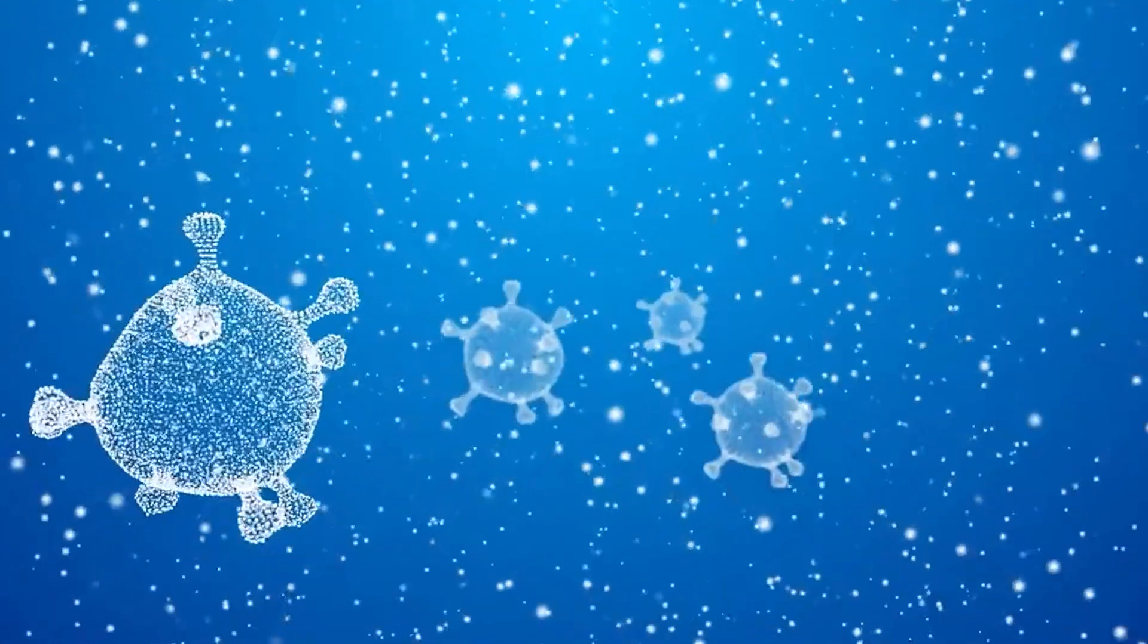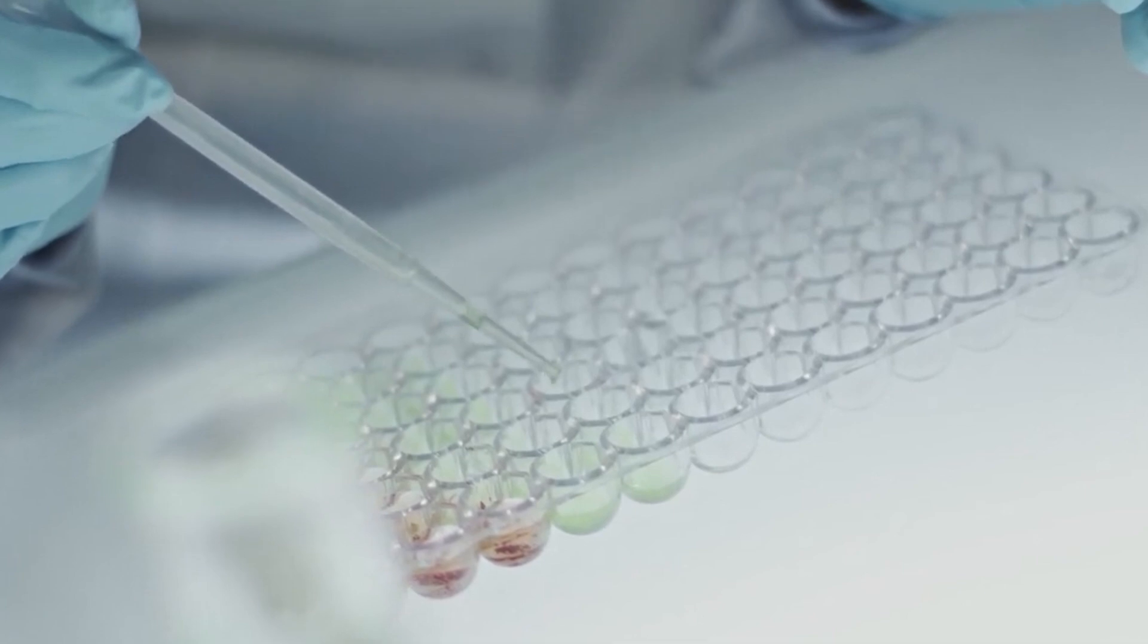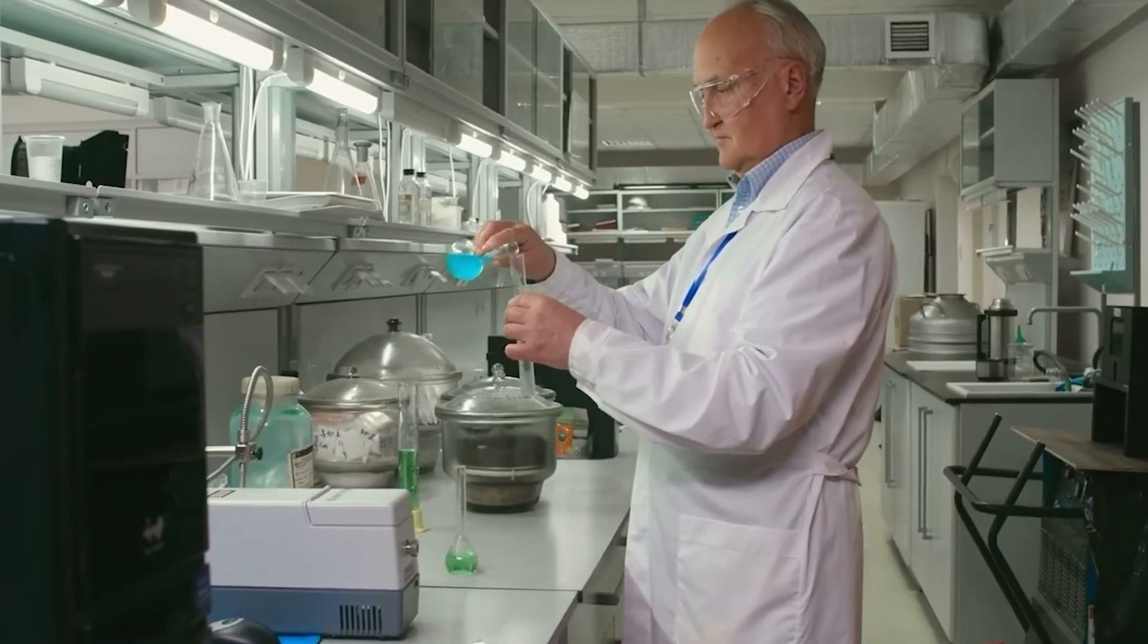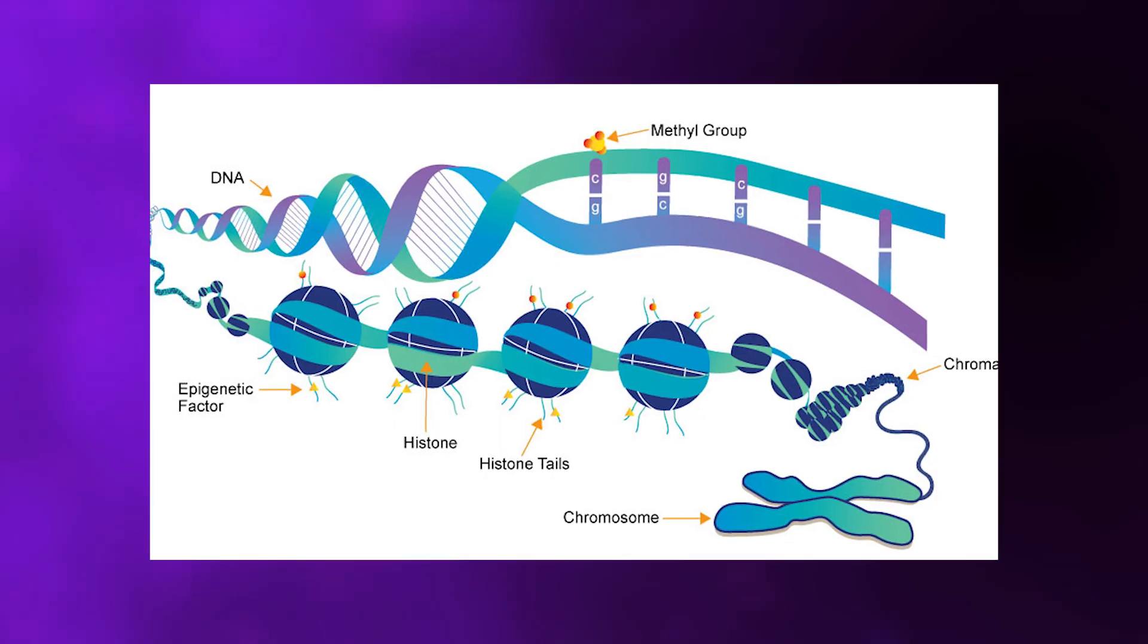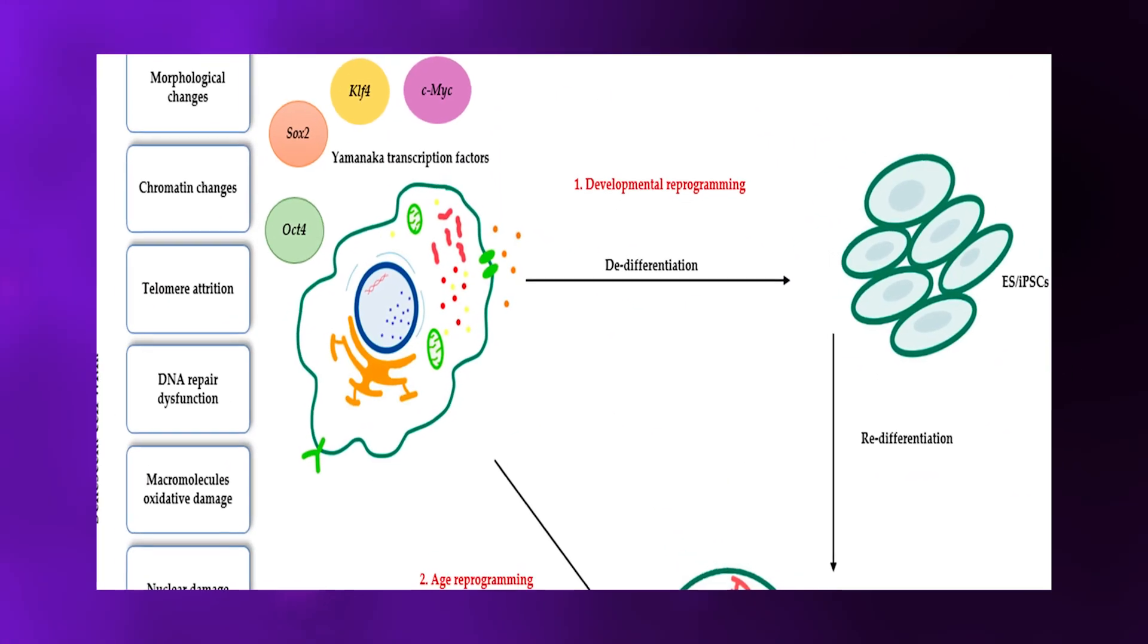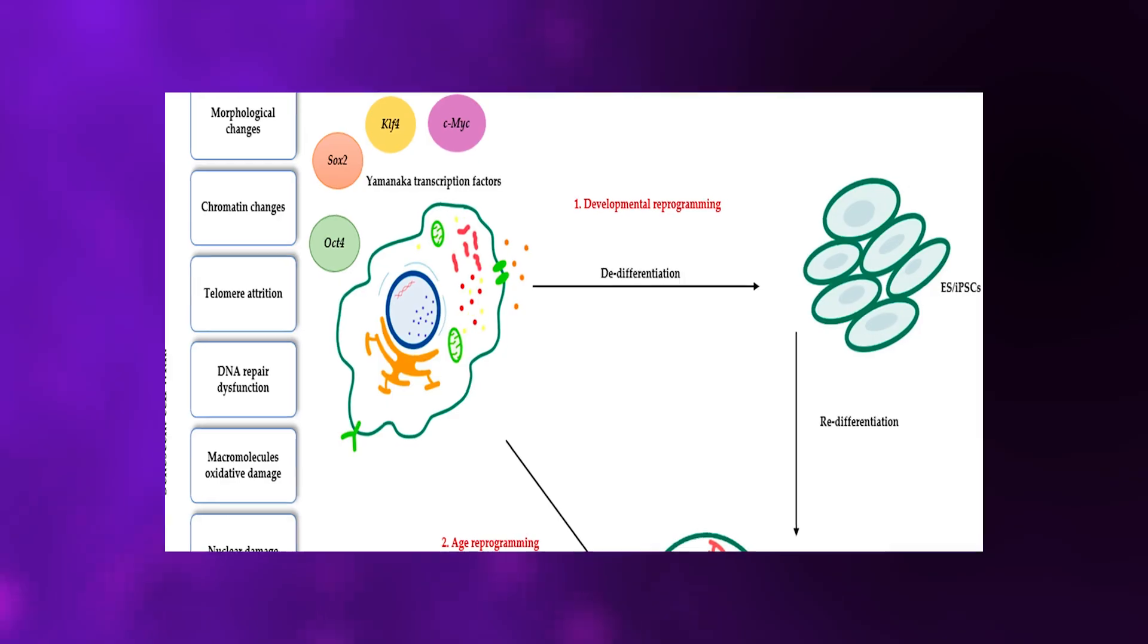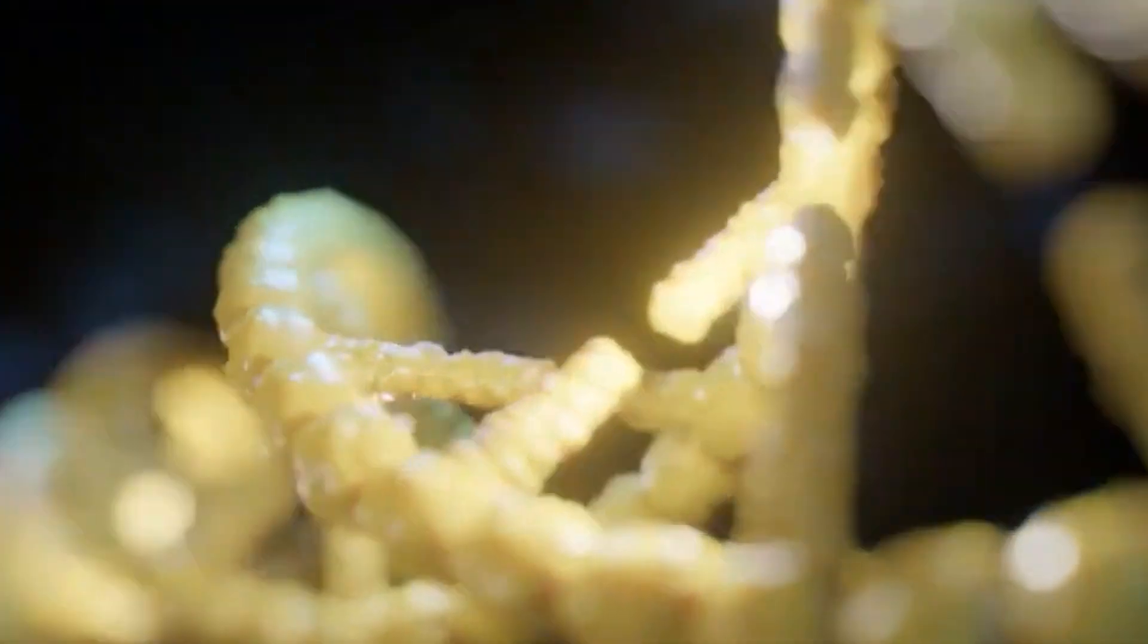Biotechnology is attacking aging from yet another angle. Biological reprogramming. Scientists have discovered they can essentially reset your cells to a younger state by manipulating epigenetic markers, the chemical tags that control which genes are active. Using Yamanaka factors, researchers have successfully rejuvenated cells in laboratory experiments, making old cells behave young again.